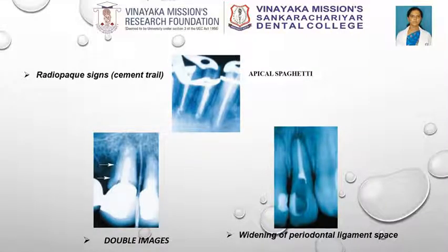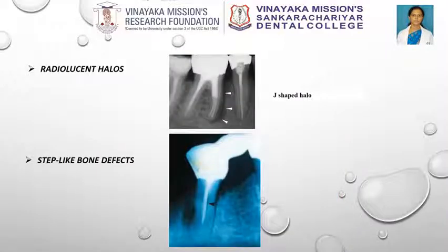Radiopaque signs — cement trail: where separation of fracture occurs during root filling, extrusion of root filling material through the apex can result in a tangle of accessory points at the apex, called apical spaghetti. Double images: when separation of fragment occurs in a direction other than parallel to the X-ray beam, overlapping of fragments may result in double images of the external root surface. Widening of the periodontal ligament space around the whole length of the root is an indication that the tooth is vertically fractured. Radiolucent halos: a halo-like radiolucency is a combination of periapical and perilateral radiolucency running around the whole of the tooth. A radiolucent halo which runs around the whole of the root surface — a J-type lesion — is a classic sign of a vertical root fracture.